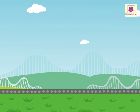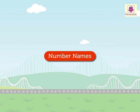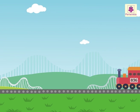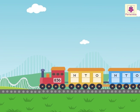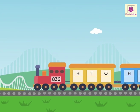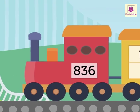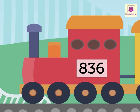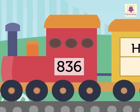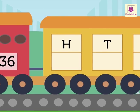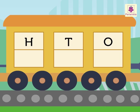Today let us learn number names with the help of a number train. Let us take the three-digit number 836. Now how do we read this number? We read three-digit numbers using their place value: first hundreds, then tens, and then ones.